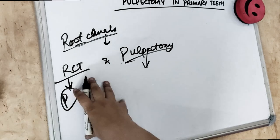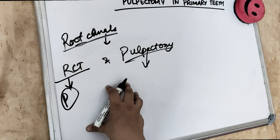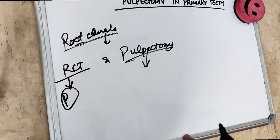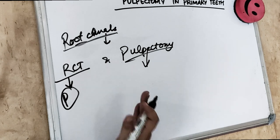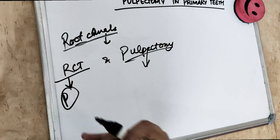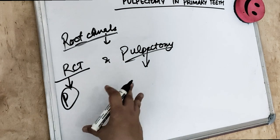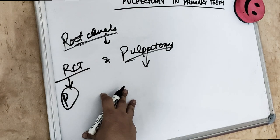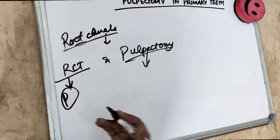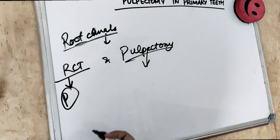In the pulpectomy procedure, we remove the roof and the pulp chamber to access the root canals. Our main objective is removing the infection that has invaded the pulp, and there should be radiographic evidence that the filling material shows success without over-extension or under-extension, and that it resorbs with time as root resorption occurs.